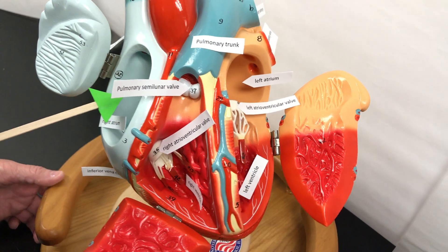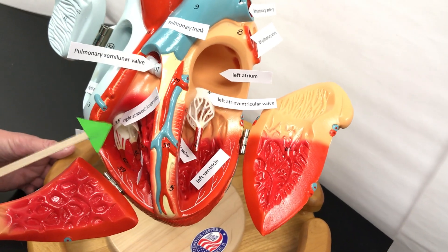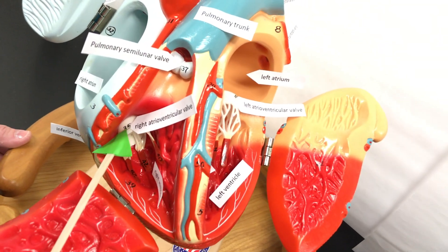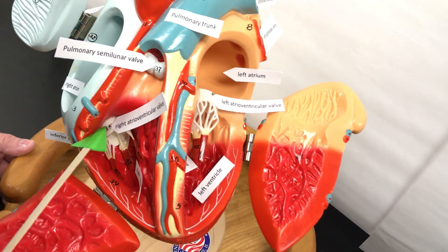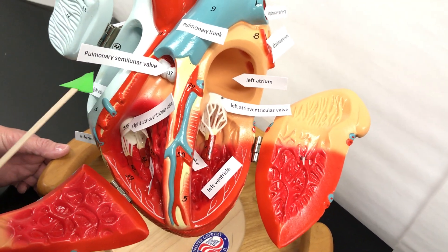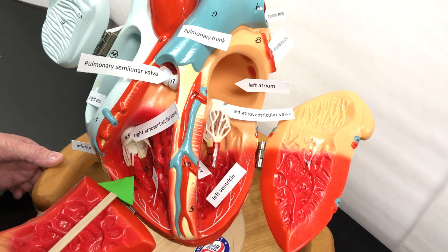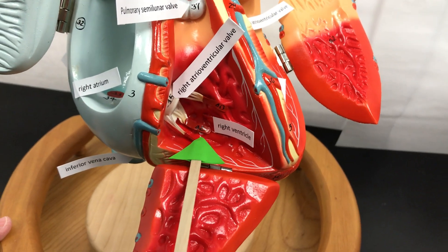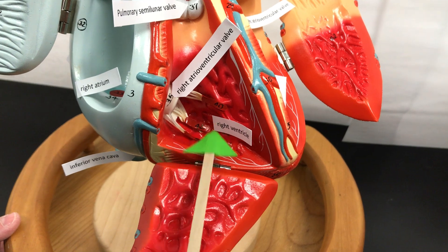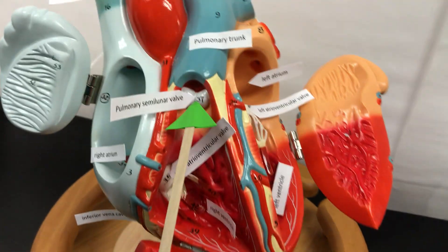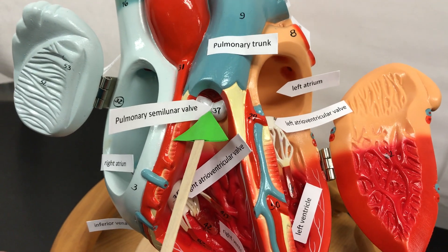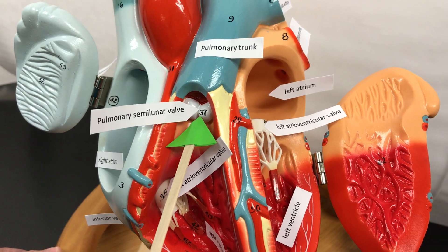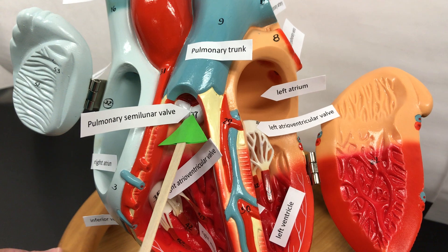The blood is going to go from the right atrium through the right atrioventricular valve — it's on the right side of your heart, going from the atrium to the ventricle. This is also called the tricuspid. The blood then goes from the right ventricle through the pulmonary semilunar valve. Pulmonary tells us we're going to the lungs, and semilunar tells us we're going to leave the heart.